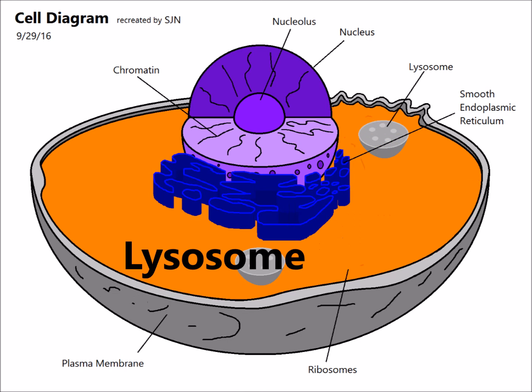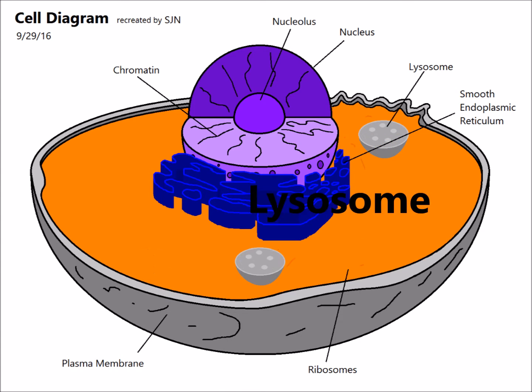Next are the lysosomes, which break down foreign particles and worn out cell parts. In this diagram, I colored the lysosomes grey.